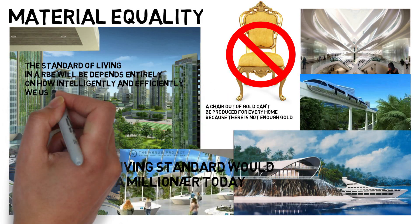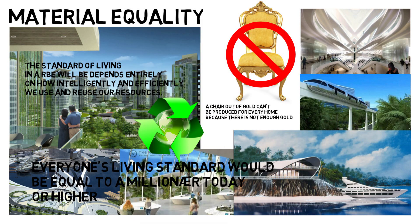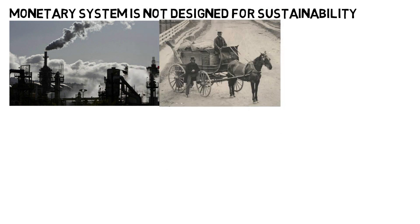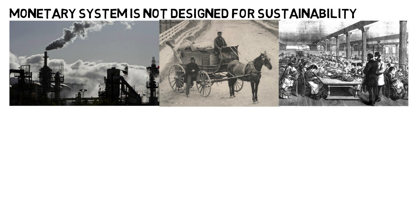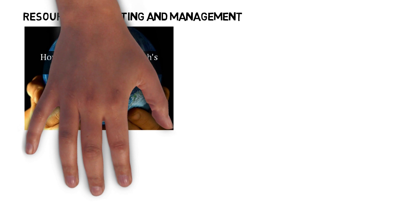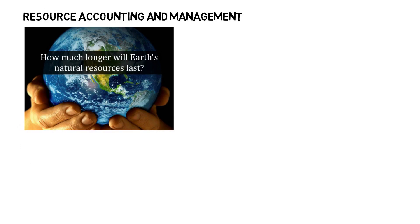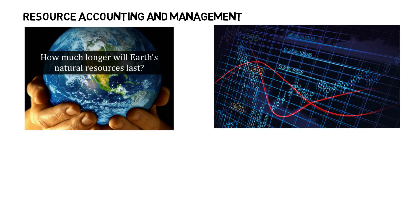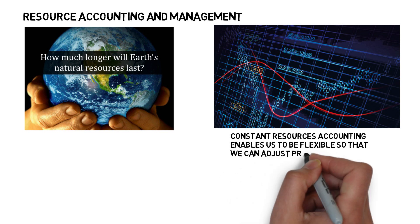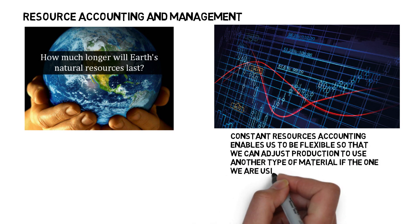The standard of living in an RBE will depend entirely on how intelligently and efficiently we use and reuse our resources. Our current monetary system is not designed for sustainability — in fact, sustainability is not really part of the monetary system at all, because the monetary system was invented before the industrial age. Back then, pollution was not a problem. In an RBE, we recognize that Earth's resources are finite and that some materials are more abundant than others. An ongoing resource accounting ensures that we know what we have at any given moment, both locally and globally. Abundant materials are preferred and used first, and constant resource accounting enables us to adjust production if a material becomes scarce.